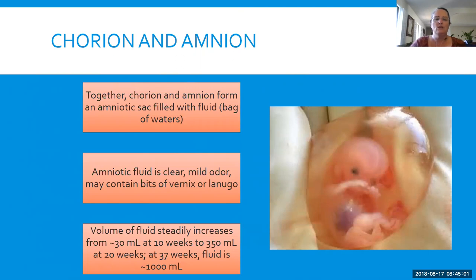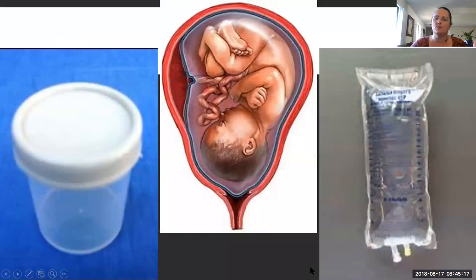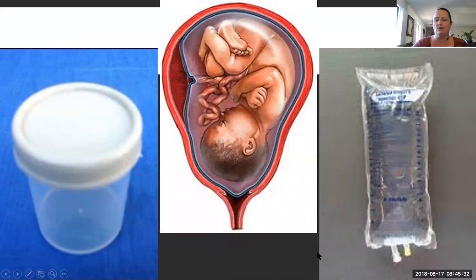Lanugo is a very fine hair that is on a fetus when it's in the uterus, and sometimes you see a little bit of it when it's born. The volume of amniotic fluid steadily increases from about 30 mLs at 10 weeks to about a liter of fluid at the time of term. Here's a visual — this is how much fluid the fetus has at 10 weeks, about the size of a urine cup, and here's a liter of fluid for a full-term baby.